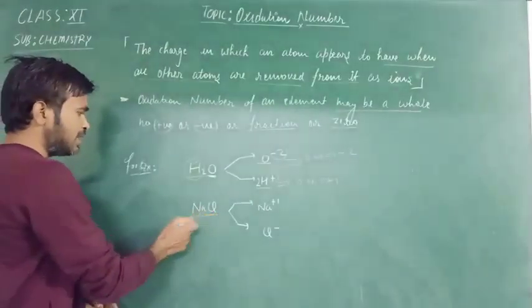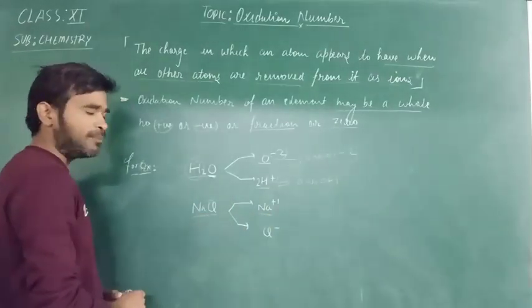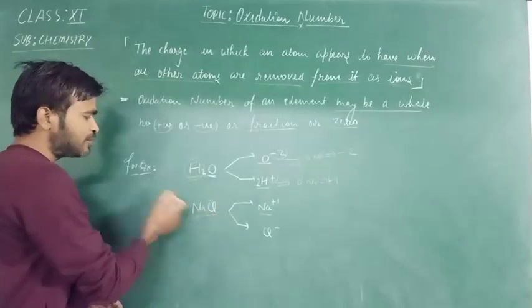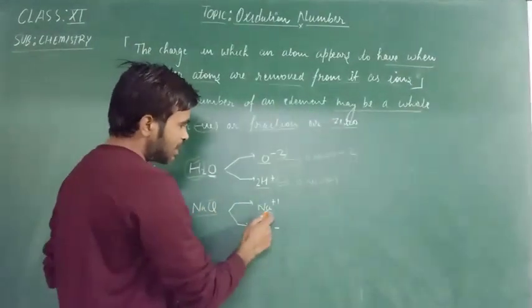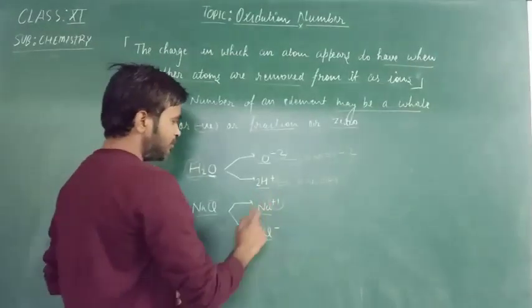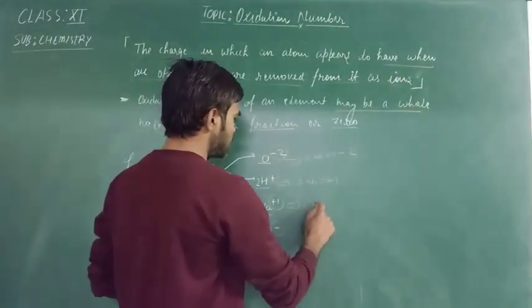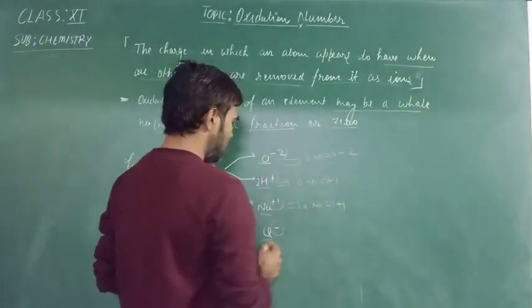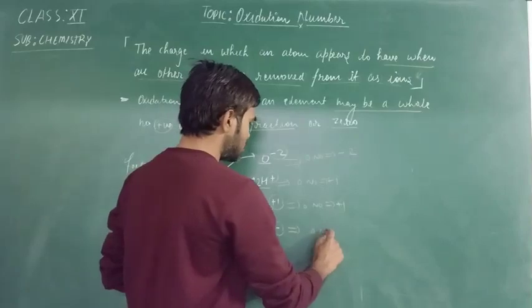Another example is NaCl. When we remove the Chlorine from the Sodium, then it ionizes as Na positive, and when we remove the Sodium from the Chlorine, then it ionizes as Cl minus. So the charge on the Sodium atom is plus 1, and on Chlorine atom minus 1. Here the Oxidation number of Sodium is plus 1, and the Oxidation number of Chlorine is minus 1.